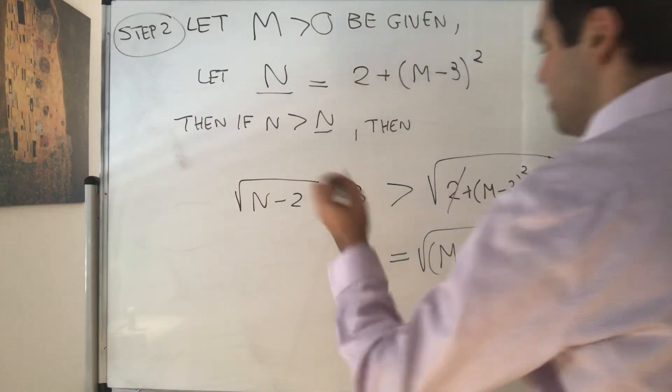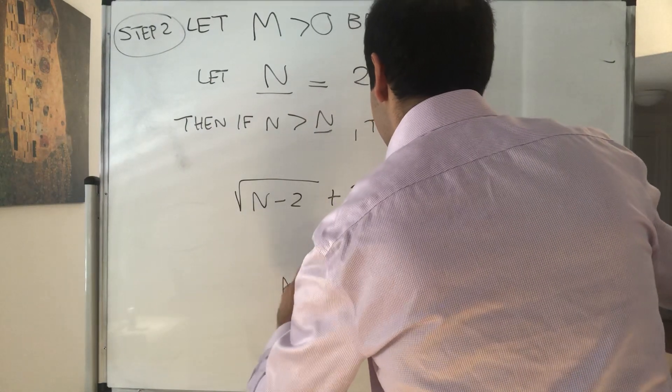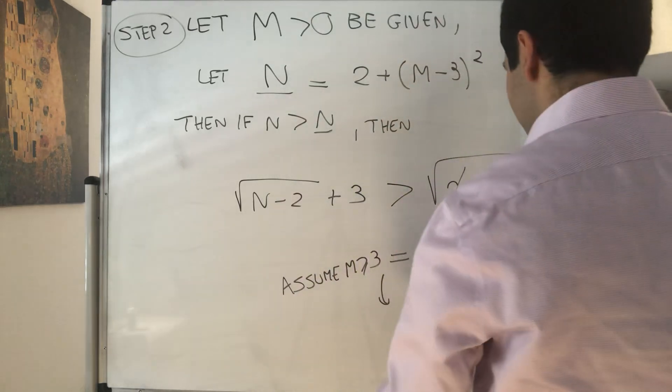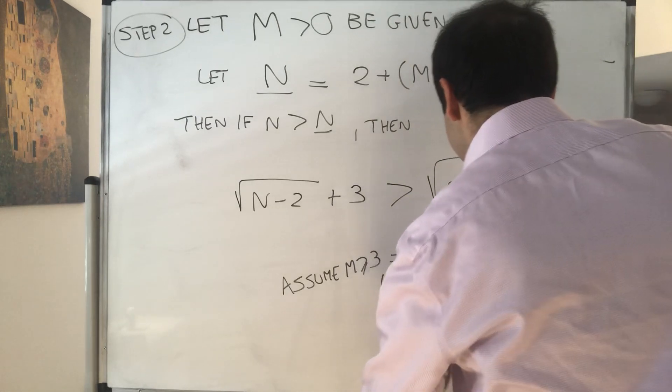But just assume m is large enough such that this is bigger than 3. So, assume m is greater or equal to 3, so we get m minus 3 plus 3, which becomes m.